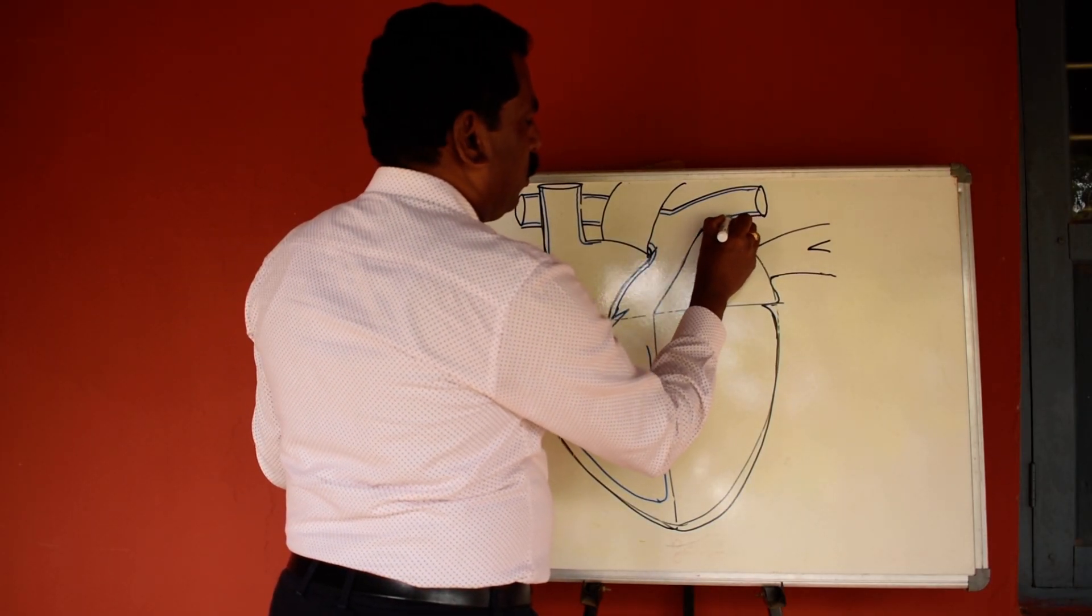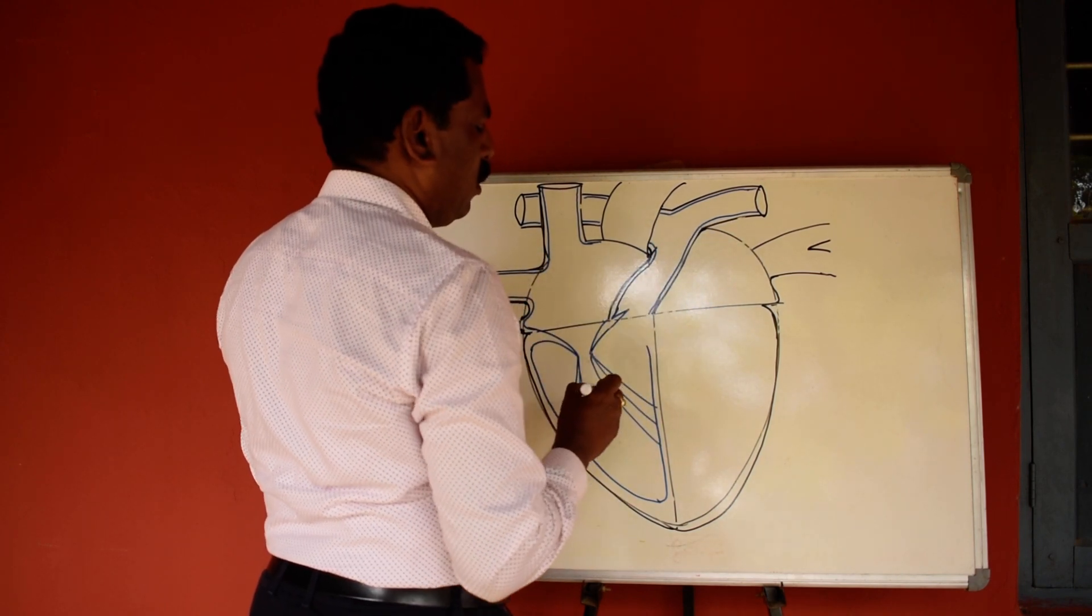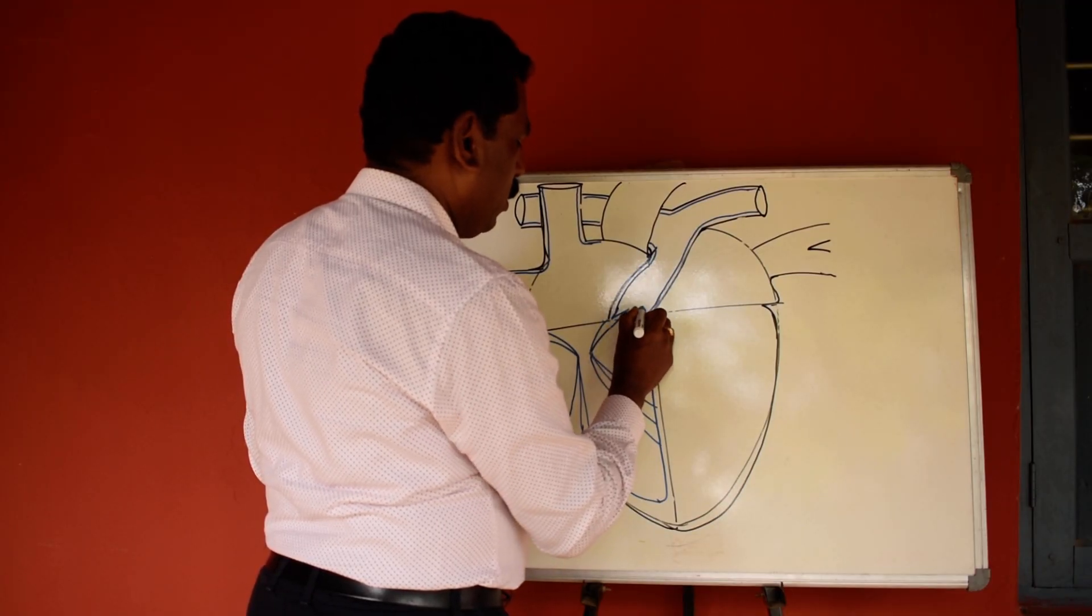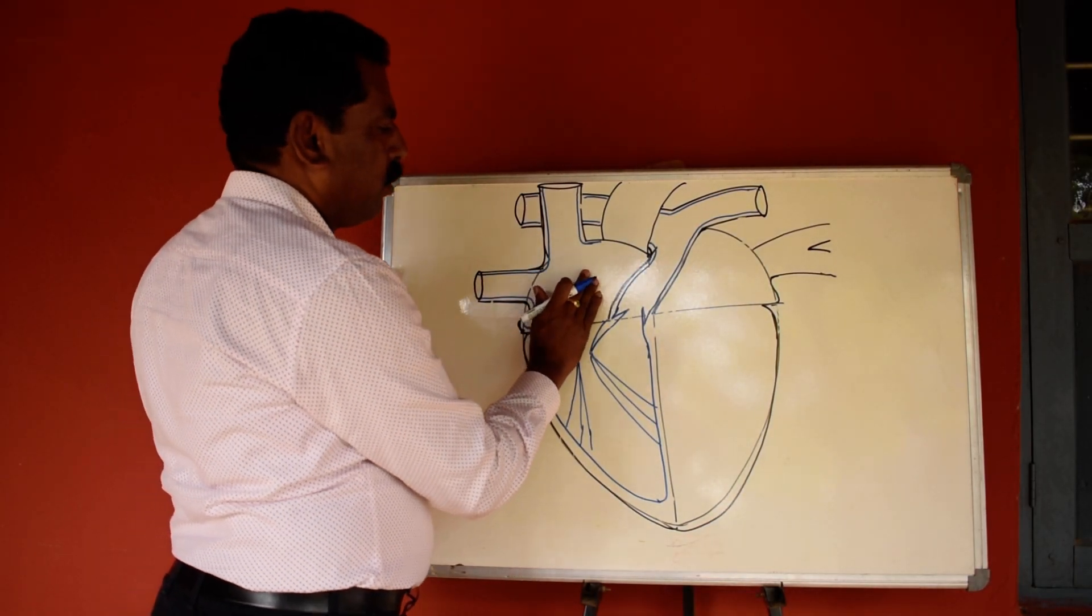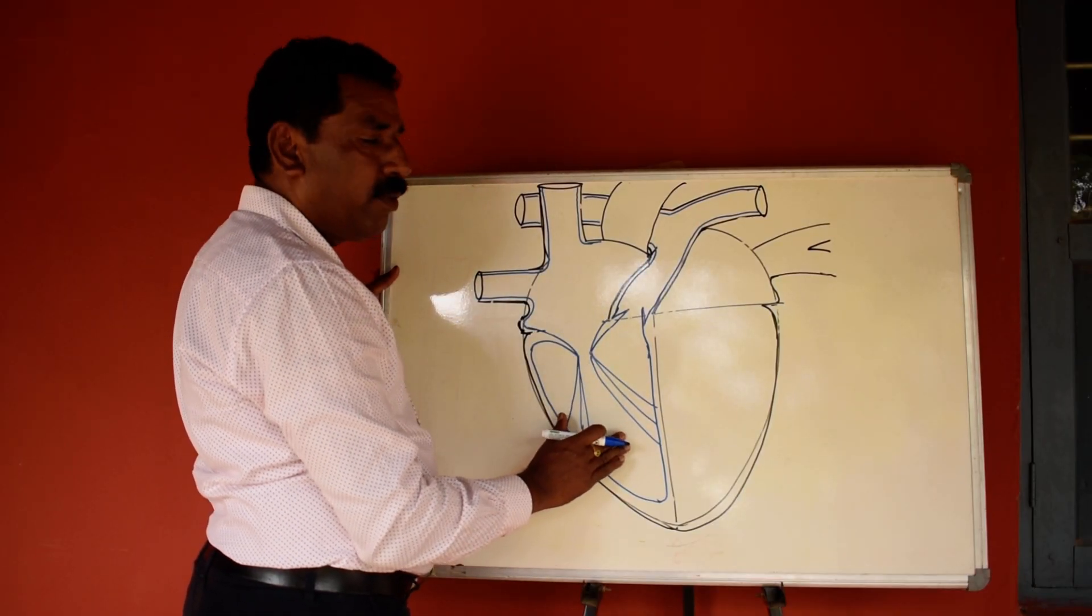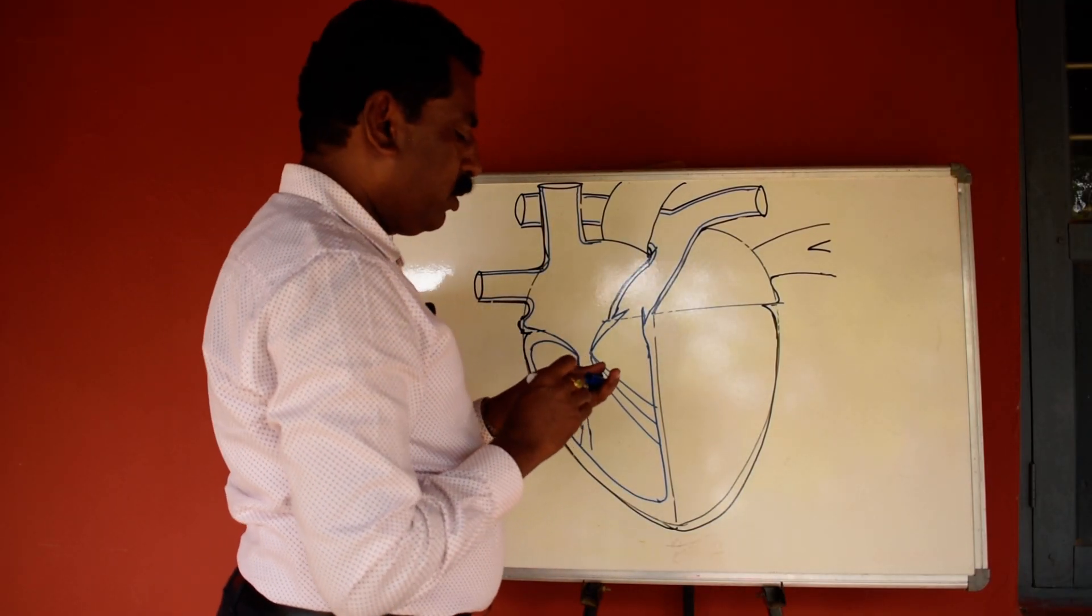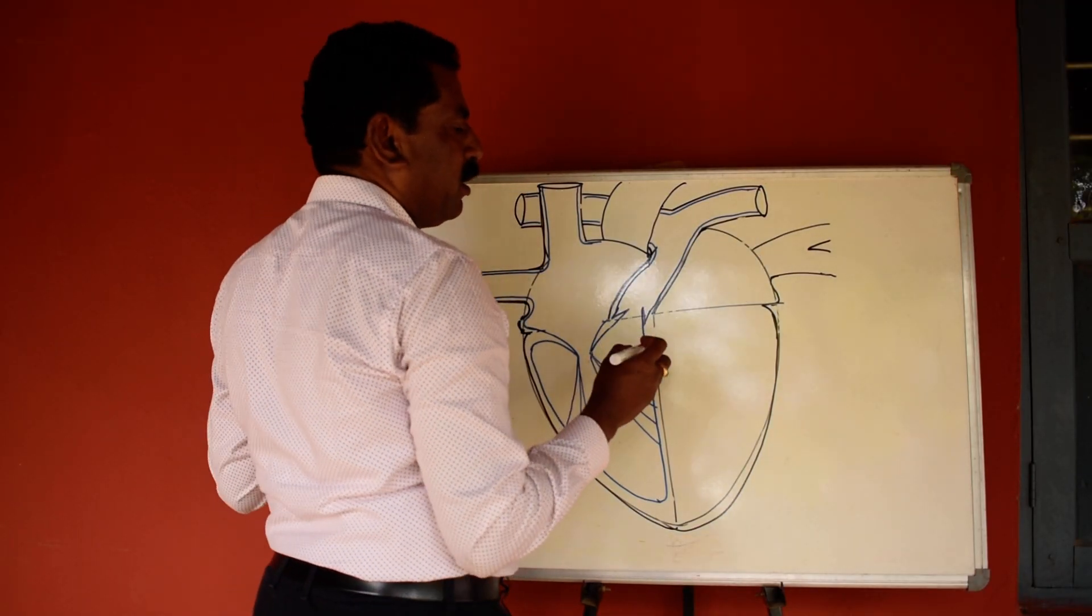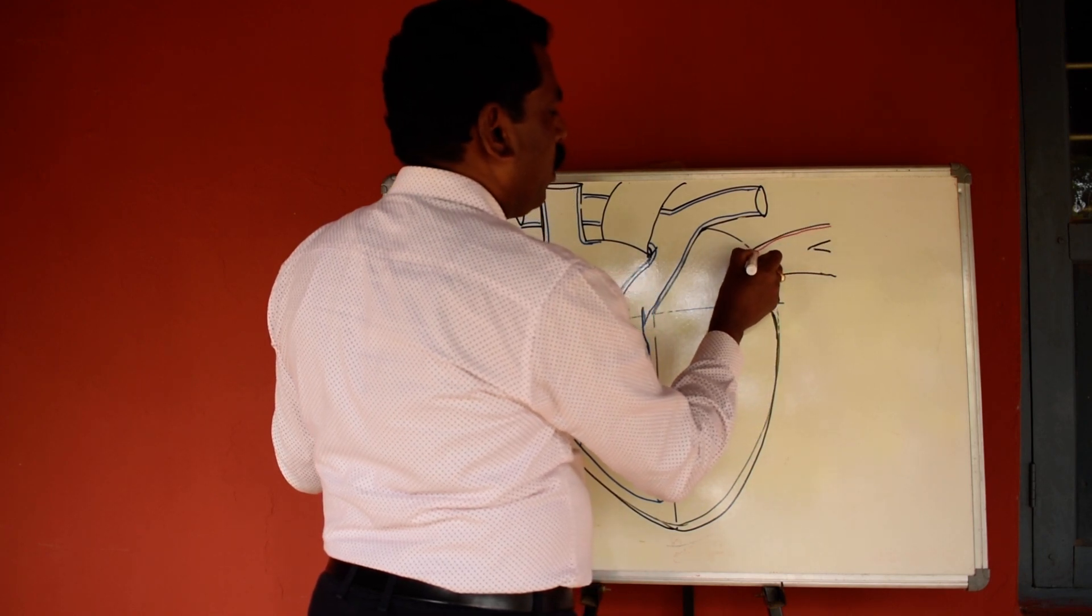Here also the line comes here and a valve and joins here. So now this is right atria and right ventricle, so two chambers over. Let's go to another side, that means left side.